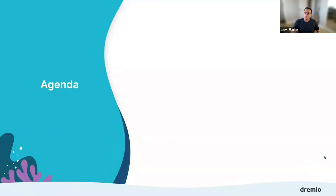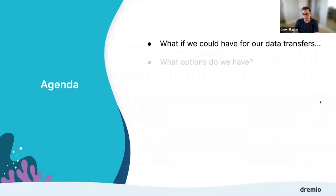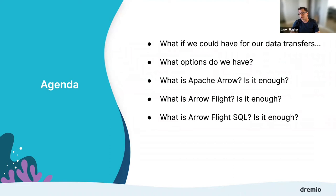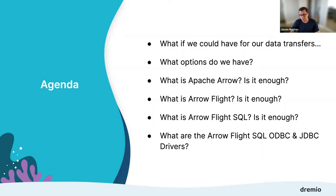So here's what we'll go through: we'll start with what if we could have our data transfers meet certain requirements — a kind of ideal future state. Then we'll talk about what options we actually have to meet those requirements. We'll do a quick intro to Arrow, then discuss why Arrow alone isn't enough, why Arrow Flight exists, why that alone isn't enough either, and why Arrow Flight SQL is really needed — plus the additional value of Arrow Flight SQL ODBC and JDBC drivers.